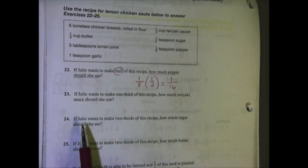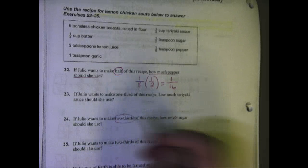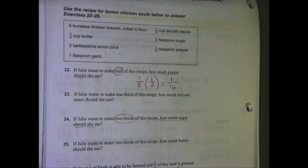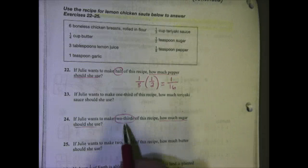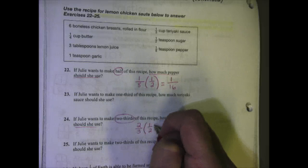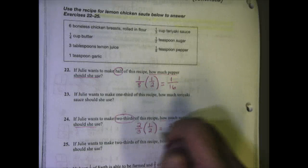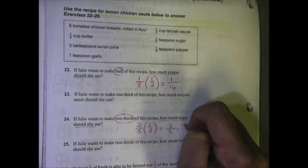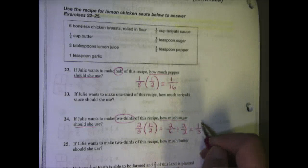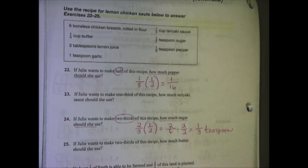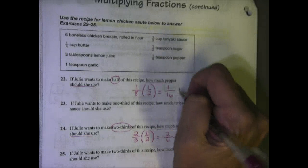Let's take a look at 24. If Julie wants to make two thirds of this recipe, how much sugar should she use? If I look at the top for sugar, it says the recipe calls for 1/2 teaspoon of sugar. So if she wants to do 2/3, we're going to take 2/3 and multiply that by 1/2. 2 times 1 is 2, 3 times 2 is 6. They're both even so I'm going to divide them by 2 and I get 1/3. So here I need 1/3 teaspoon of sugar. Up here I needed 1/16 teaspoon of pepper.